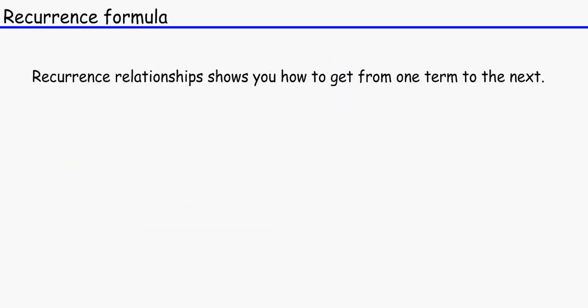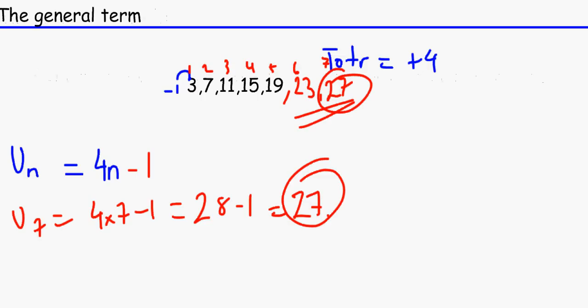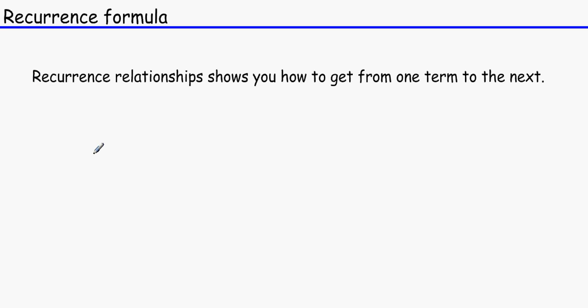The next thing we need to know about is the recurrence formula. Students can get a bit confused with this. These general terms only tell us how to get to a certain term straight away — it's like getting to London Bridge by just dropping there from the sky. The recurrence formula tells us how to get from one term — from the current term you're looking at — to the next one. It's like saying how to get from Waterloo to London Bridge — looking at how to get from the third term to the fourth term, or the fifth to the sixth.